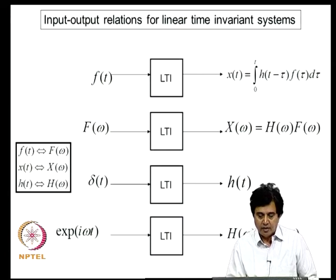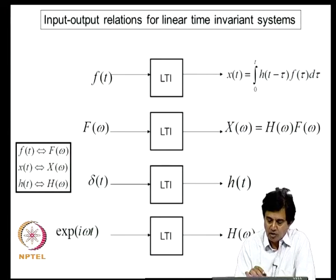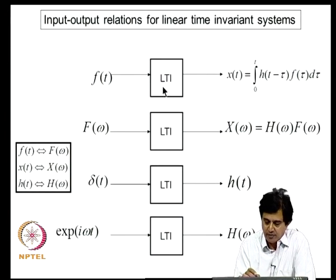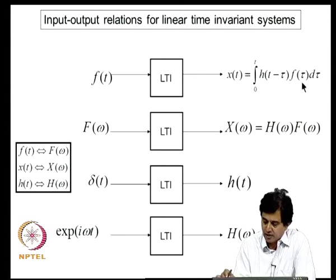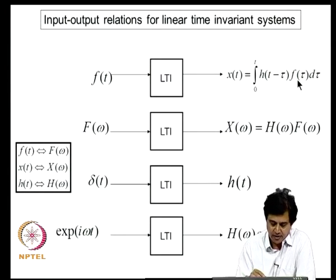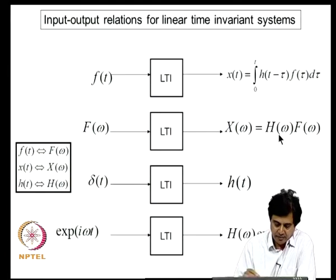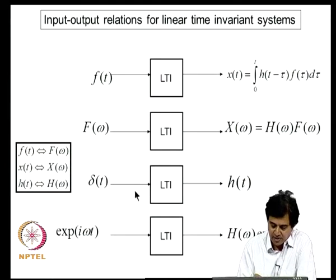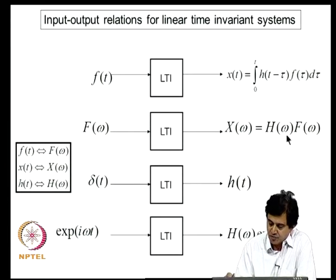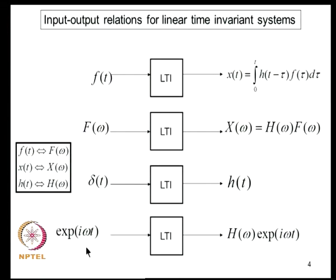The generic form of the input-output relation for linear time invariant systems is: in the time domain, it is through a convolution integral; in the frequency domain, it is through a frequency response function. The impulse response H is the response of the system to a unit impulse, and H-bar is the amplitude of the response to an external harmonic excitation.